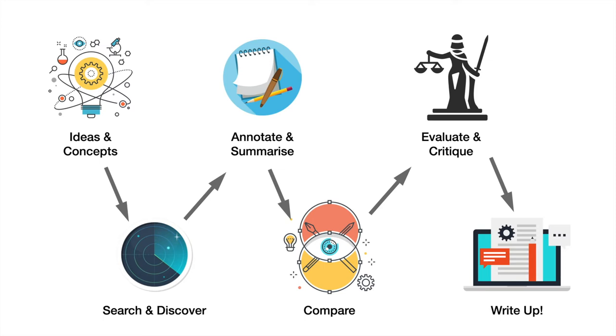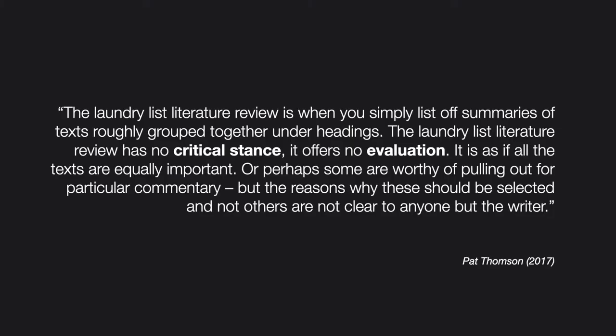Pat Thompson, who runs the Excellent Patter blog, describes an uncritical literature review as the Laundry List. She says: "The Laundry List Literature Review is when you simply list off summaries of texts roughly grouped together under headings. It has no critical stance and offers no evaluation. It's as if all the texts are equally important, or perhaps some are worthy of pulling out for particular commentary, but the reasons why these should be selected and not others are not clear to anyone but the writer."